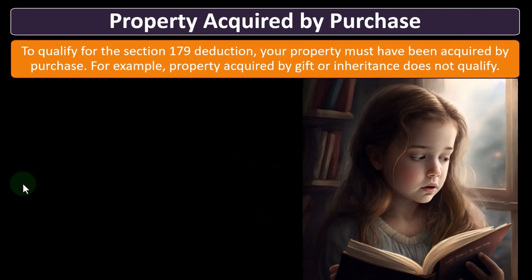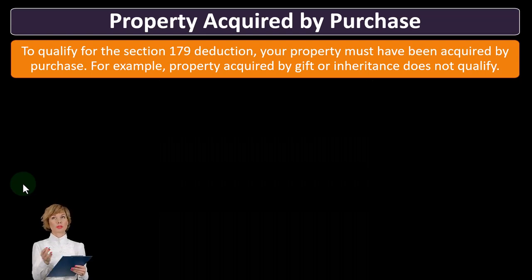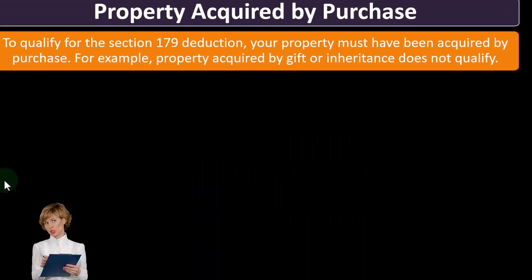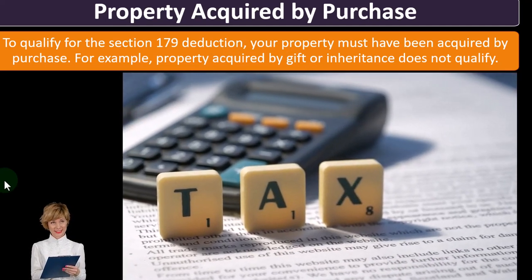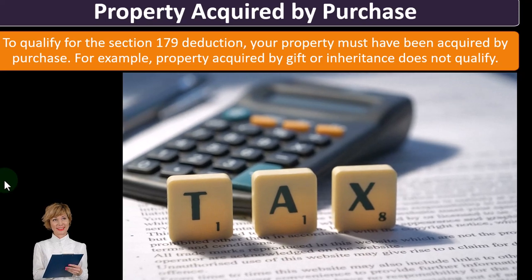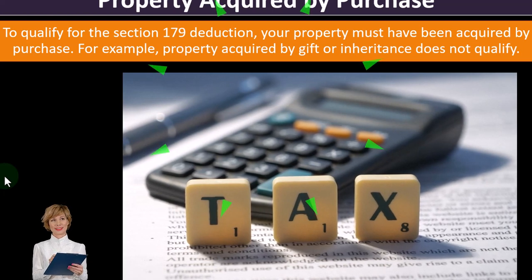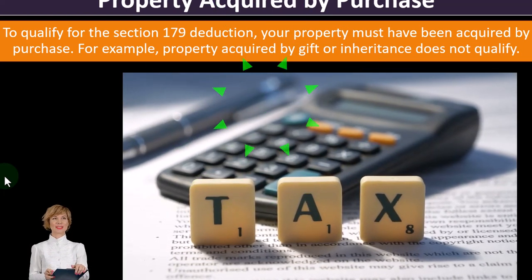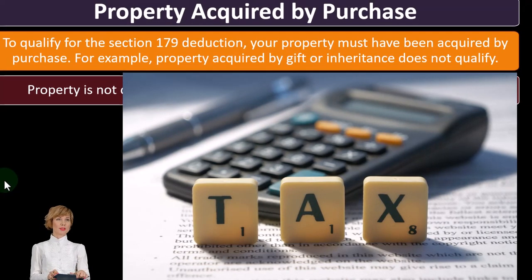Usually in a gift you might have to take on the basis of the person who gifted it — they might have bought the property far back in history, meaning a fairly low basis, which usually isn't as good. In an inheritance, if someone dies and gives you property, the estate may be subject to estate tax. At that point, you might get a step-up in basis, so you can put it on the books at a higher value. But you can't do the 179 for inherited property. So you have to buy it for 179.